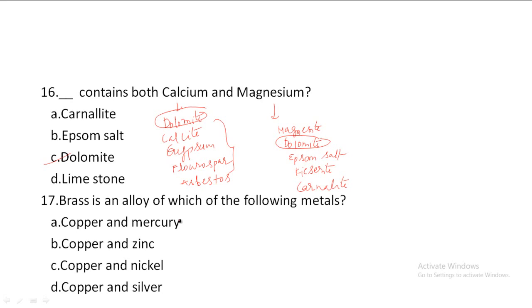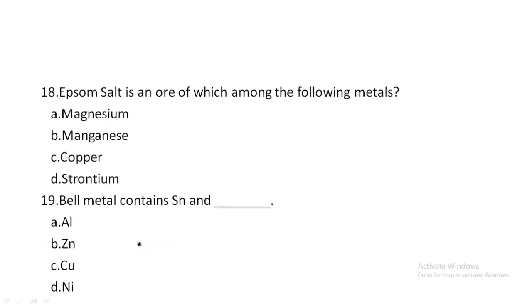Next one: Brass is an alloy of which of the following metals? Option A: Copper plus Mercury, Option B: Copper plus Zinc, Option C: Copper plus Nickel, Option D: Copper plus Silver. Brass is an alloy of Copper plus Zinc. Option B is the correct answer. Epsom salt is the ore of Magnesium — Option A is the correct answer.